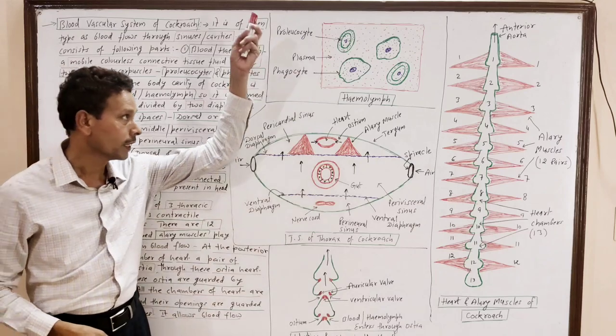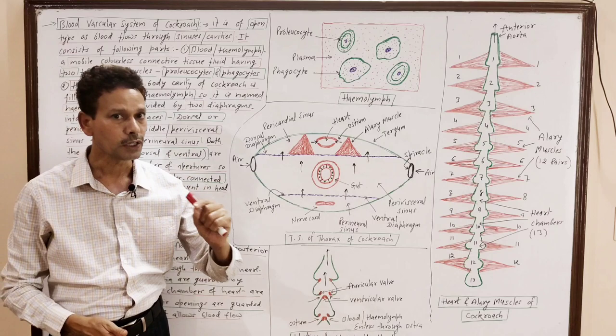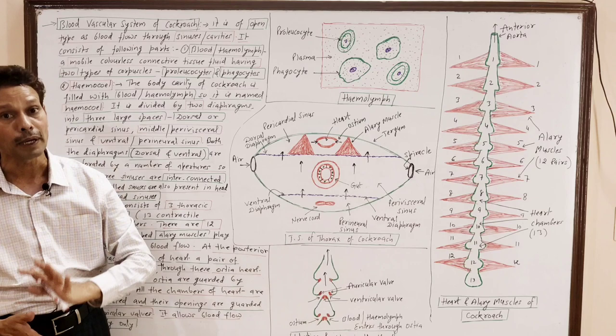Dear students, please note down. The PDF file of all these notes have been uploaded in the description of the video lecture. Please download your notes. Today we will discuss the blood vascular system of cockroach, Periplaneta americana.